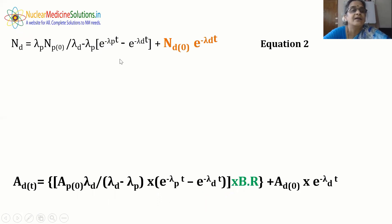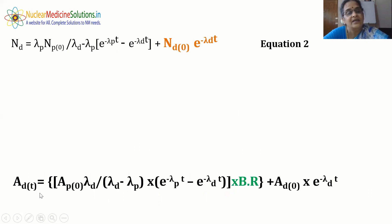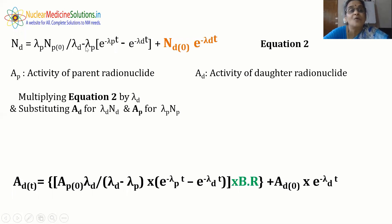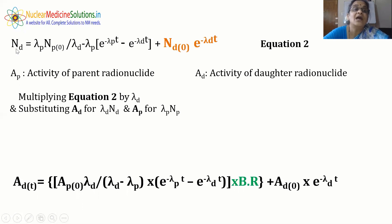To convert the number of radioactive atoms into activity in millicuries, we multiply both sides of the equation by λ_D. Since activity A = λ·N, λ_D·N_D becomes A_D, and λ_P·N_{P0} becomes A_{P0}. This substitution converts the equation into terms of measurable activity.